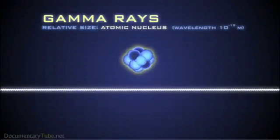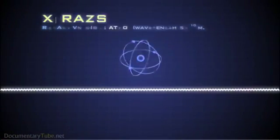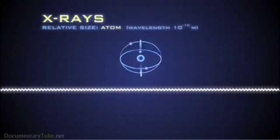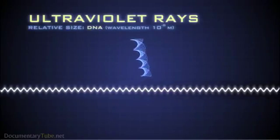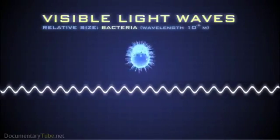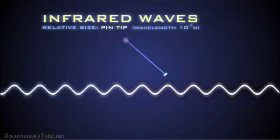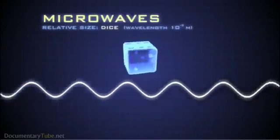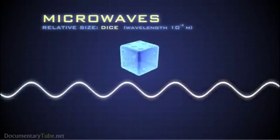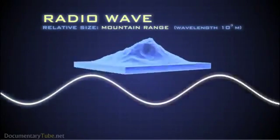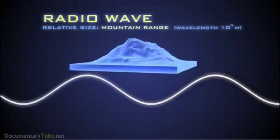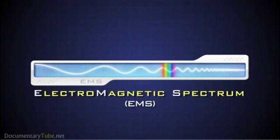These waves spread across a spectrum from very short gamma rays to x-rays, ultraviolet rays, visible light waves, even longer infrared waves, microwaves, to radio waves which can measure longer than a mountain range. This spectrum is the foundation of the information age and of our modern world.